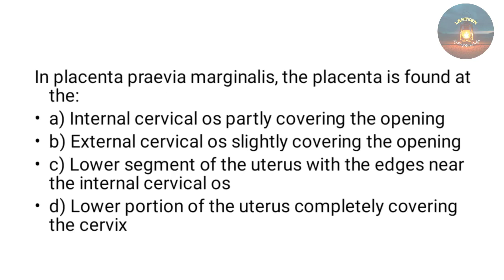In placenta previa marginalis, the placenta is found at — the internal cervical os partly covering the opening, external cervical os slightly covering the opening, lower segment of the uterus with edges near the internal cervical os, or lower portion completely covering the cervix? The answer is lower segment of the uterus with edges near the internal cervical os.